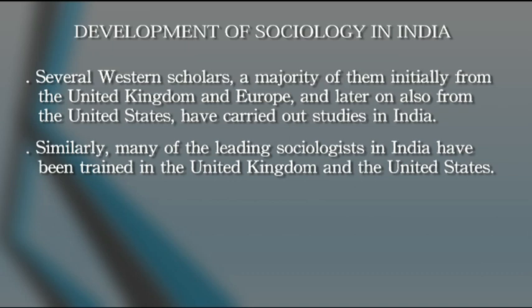So at the time of independence in 1947, as far as the development of sociology in India is concerned, you had departments of sociology and anthropology in Bombay, Calcutta, and Lucknow — all of which were initially started under the chairmanship of western sociologists and anthropologists, and then the mantle was passed on to Indians who had been trained abroad under western sociologists. The professionalization of sociology in India was thus influenced by the west.